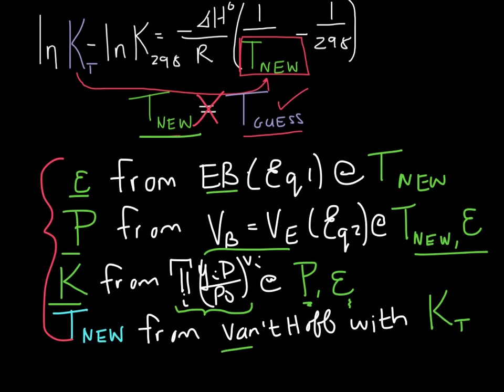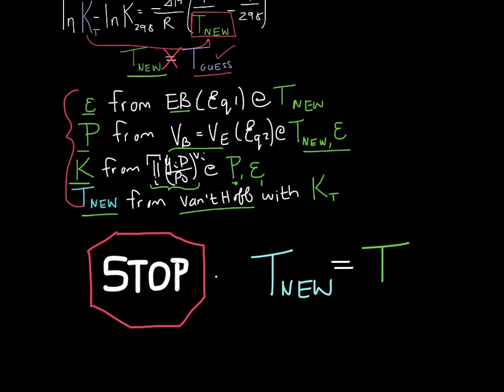And now from the Van't Hoff equation we can calculate a new value for temperature. Of course we can exit the loop once the new value that we get from our Van't Hoff equation is the same as the one that we used at the start of the loop.